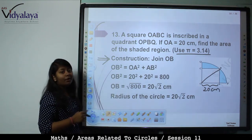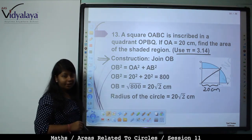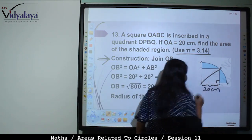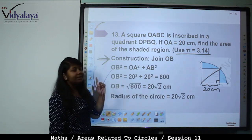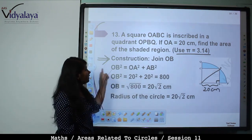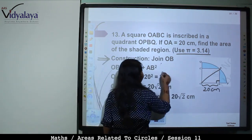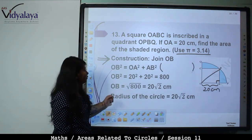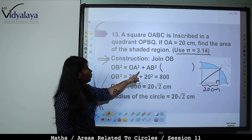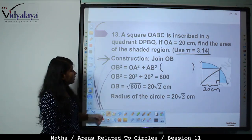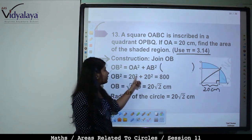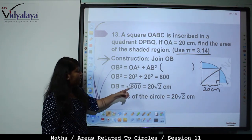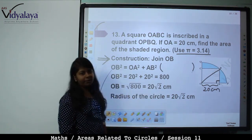Since OABC is a square, all angles are 90°. Using Pythagoras theorem: OB² = OA² + AB² = 20² + 20² = 800, so OB = √800 = 20√2 cm.